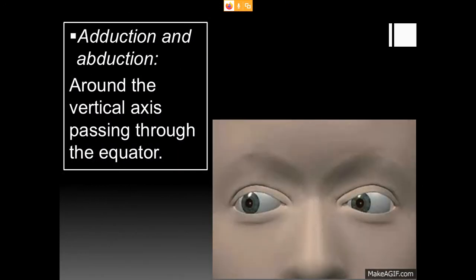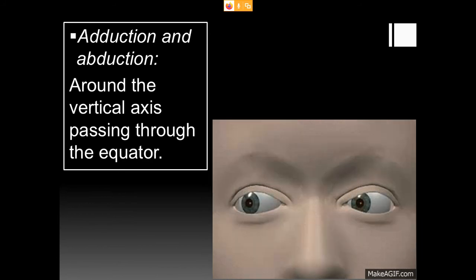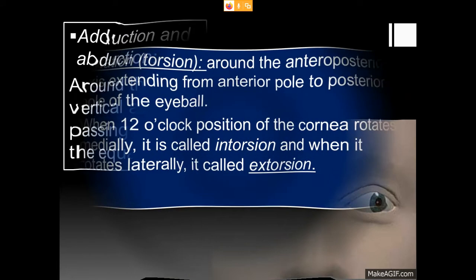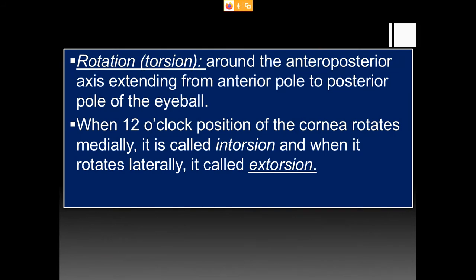Adduction and abduction occur around the vertical axis passing through the equator. Torsion (rotation) occurs around the anterior-posterior axis extending from the anterior pole to the posterior pole of the eyeball. When the 12 o'clock position of the cornea rotates medially, it is called intorsion; when it rotates laterally, it is called extorsion.